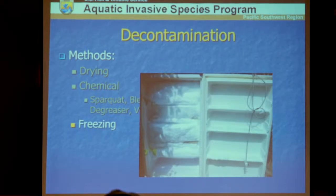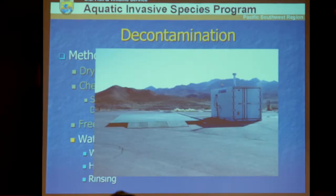Freezing also works for decontamination. Put waders or equipment in a large garbage bag, place it in a chest freezer for 24 hours solid, and you're good to go. Plain water methods also work — water pressure to wash invasives off, heated water temperature for a pressure wash, and rinsing. Parameters for water temperature and contact time to kill quagga mussels are available on the 100th Meridian website.